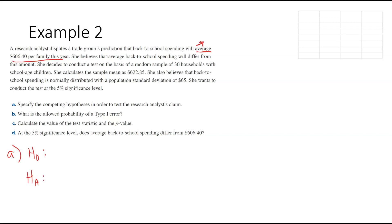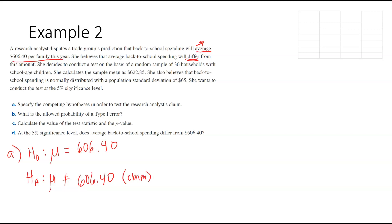Let's get our null and alternative hypothesis. We're talking about mu and the value is 606.40. They tell us they believe it is this amount — equal is always our null. She believes it's different, and 'different' means not equal to. So the not-equal-to hypothesis is the alternative. This is the claim — they think it's going to be different.